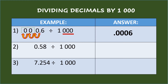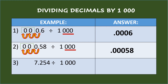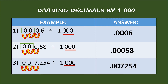So the answer is six ten-thousandths. Third example: seven and two hundred fifty-four thousandths divided by one thousand. The divisor one thousand has three zeros, so move the decimal point of the dividend three places to the left and add zeros to fill in the vacant places. So the answer is seven thousand two hundred fifty-four millionths.